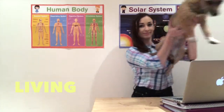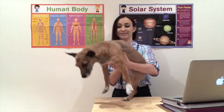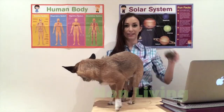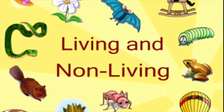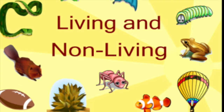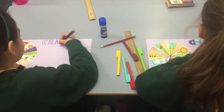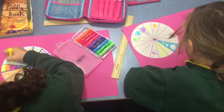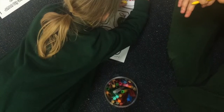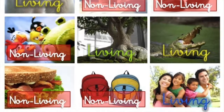To begin the unit, students need to be taught that there is a difference between living and non-living. Students can come up with their own labels, then colour in, cut out and stick pictures of living and non-living things into their science journals with appropriate headings.